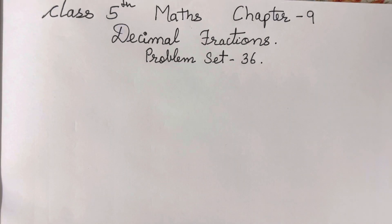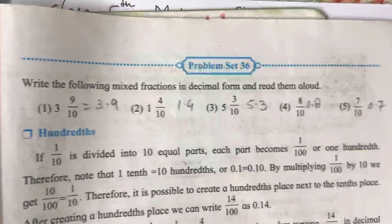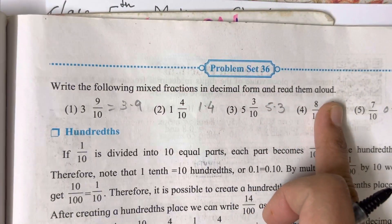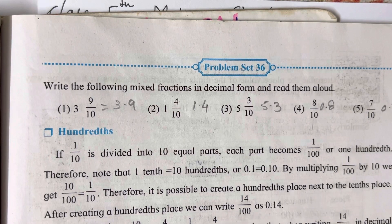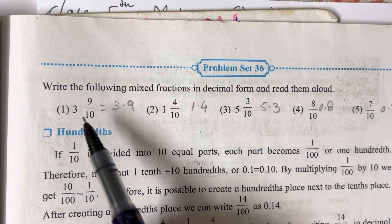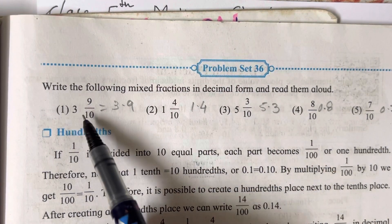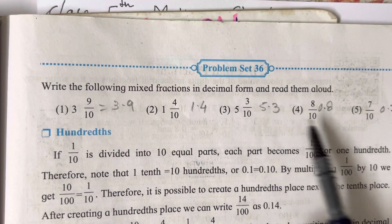Hello everyone, welcome back to my channel. Today we are going to study Chapter 9, Decimal Fractions, Problem Set 36. We will be completing it in today's video. In this question, what we have to do is write the following mixed fractions in decimal form and read them aloud. Read them aloud means you'll have to write it in the form of words also.